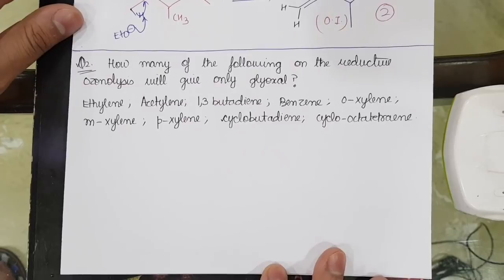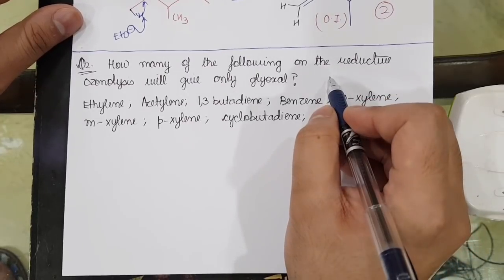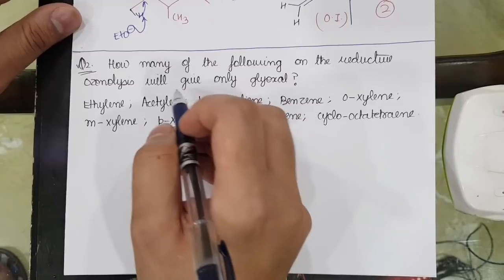I hope it is clear. Now let me move on to the next question. The next question is: How many of the following on reductive ozonolysis will give glyoxal?